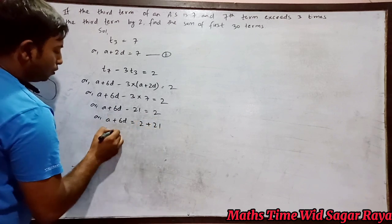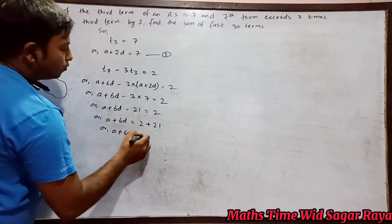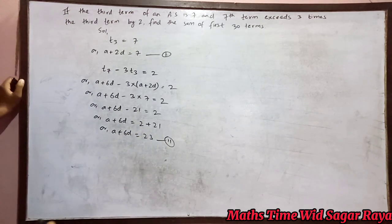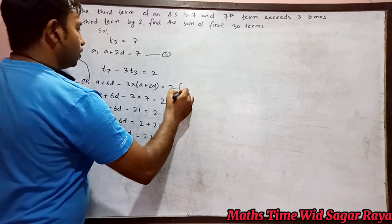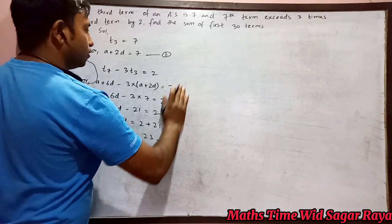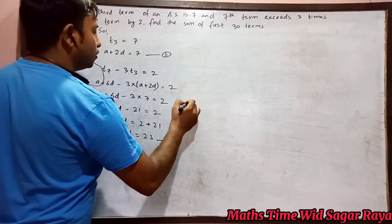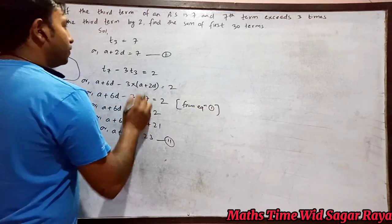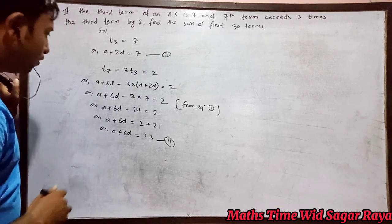So a plus 6d equals 23. Let it be equation 2. This 7 comes from equation 1. Now we have to solve these equations.